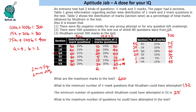Next question: what is the maximum number of questions Shubham could have attempted in the test? This is a very easy question — do not confuse it with a tricky one. There is no negative marking, so the maximum he could attempt is all 500 questions. Some might think this requires calculation, but if it asks maximum attempts, the answer is simply 500. However, if the question were changed to 'correctly attempted,' we would need further analysis.